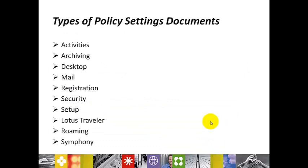The Activities setting document specifies a user's activities on the server and the port to which the server is assigned. The Archive setting document specifies what documents or attachments to archive from mail files and where to place the archive. Server-to-server archiving can archive all mail to a central server, so complete archiving-related information can be set up under the archiving setting document. Desktop specifies numerous types of settings to implement on an ongoing basis.